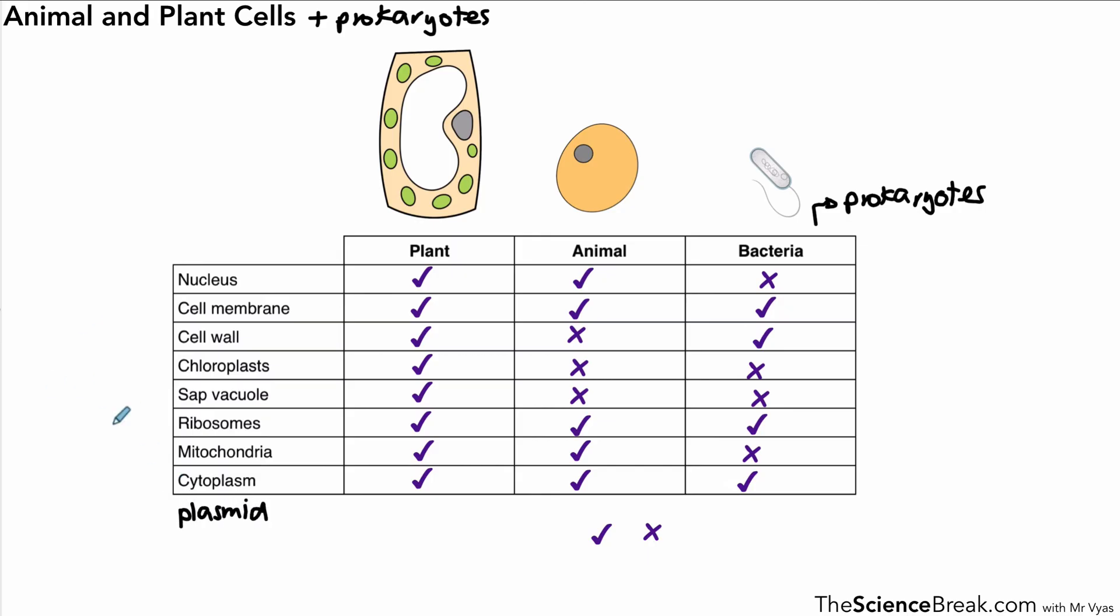In fact, there was one other part which we mentioned which is not on our list, and that's something called the plasmid. We found that not in plant or animal cells, but in bacteria. It's probably worth mentioning also that while we say plant cells have chloroplasts, it's not every single type of plant cell. For example, the roots don't have chloroplasts because they live under the soil and don't carry out photosynthesis.